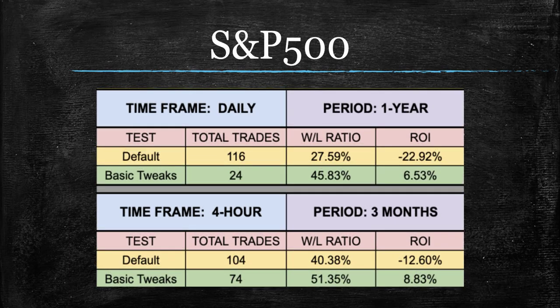S&P 500 — decent for sure, not over-the-top great. But you might have to average down a little bit for baselines, so this could still be worth testing in your system, especially on the 4-hour — that's a really good starting place for the S&P 500. And we know a lot of the indices sometimes have a tendency to move together, so whatever you're testing out there, whether it's the DAX or the Nikkei, give it a whirl.